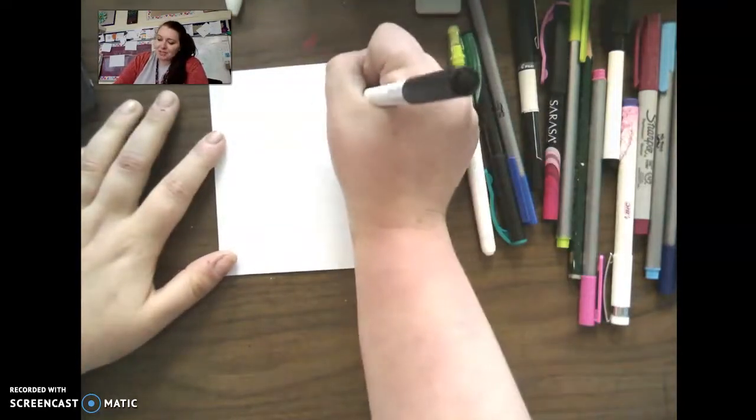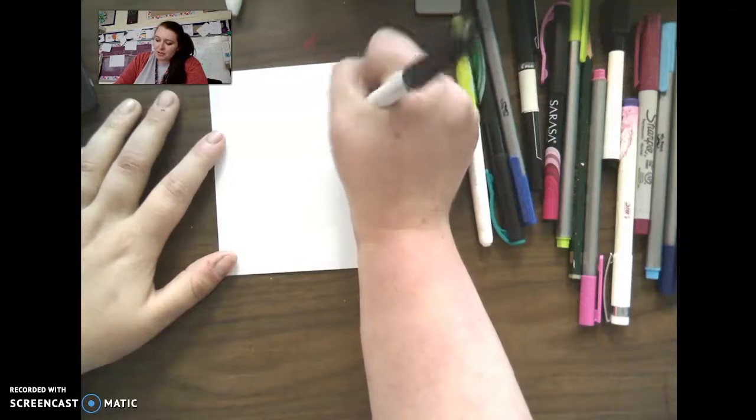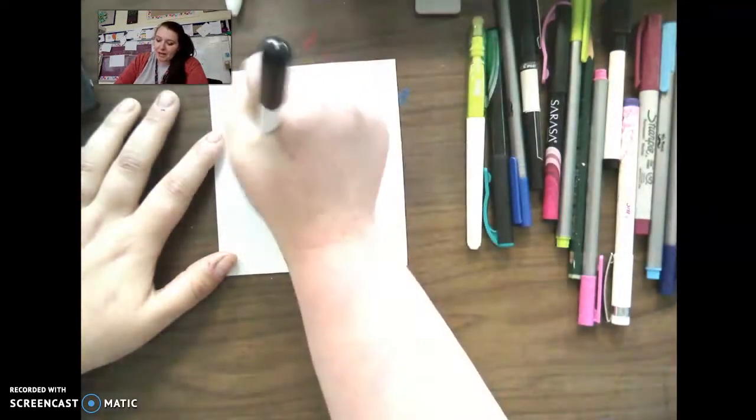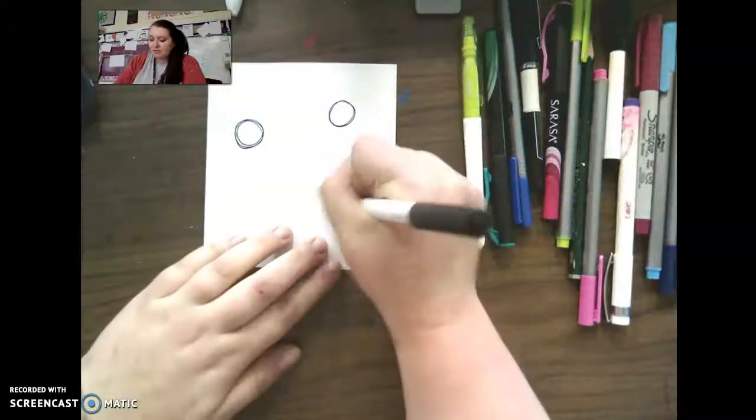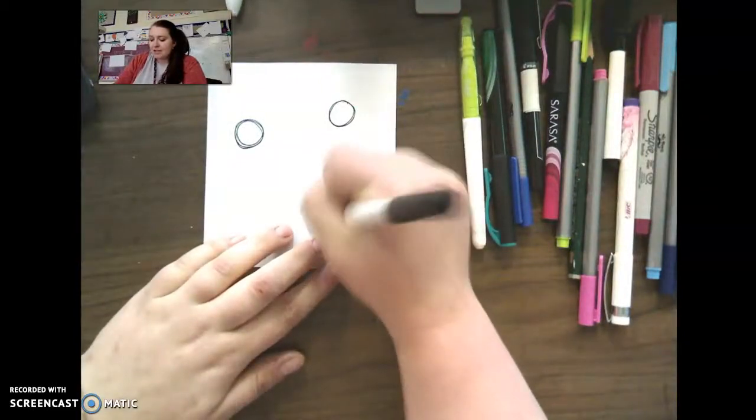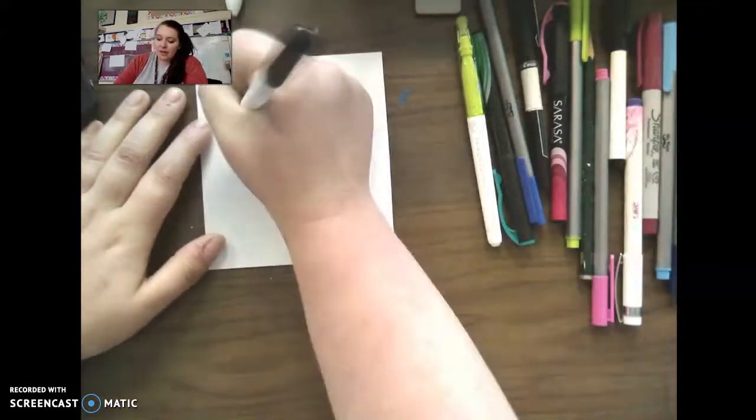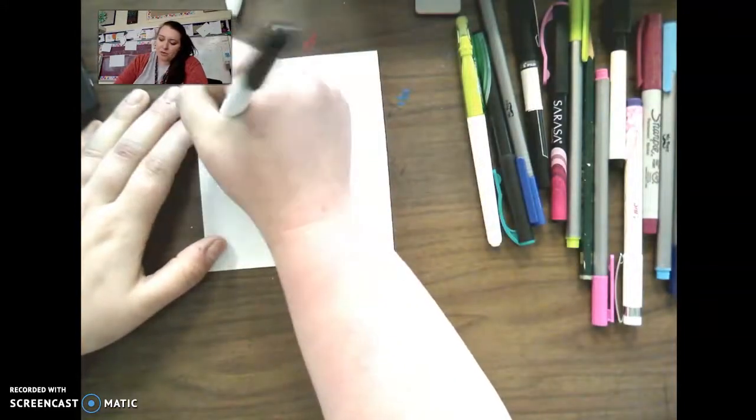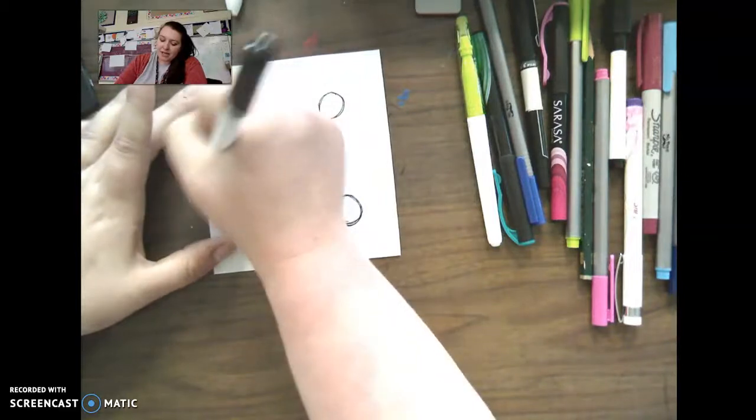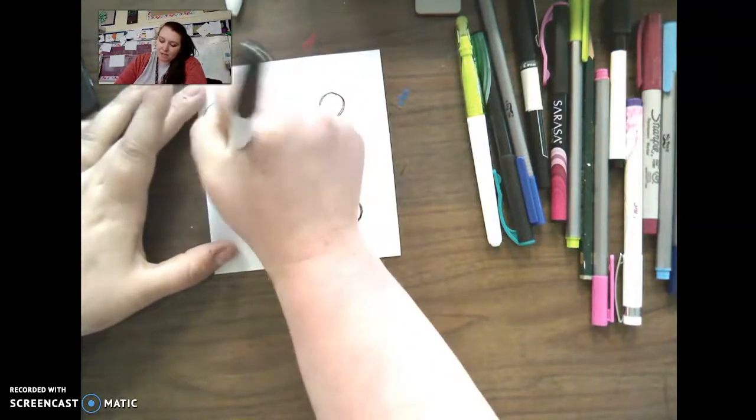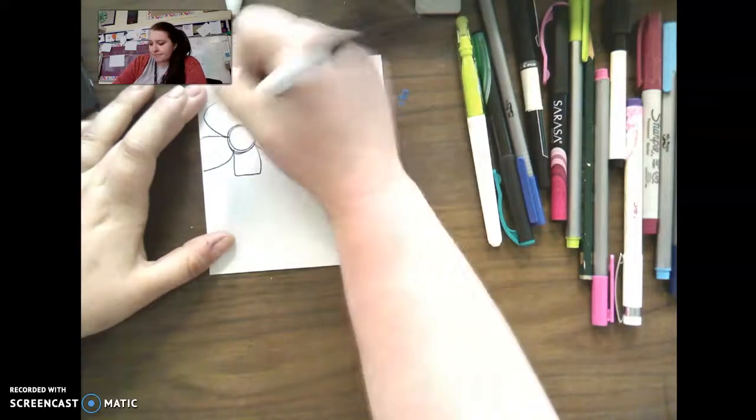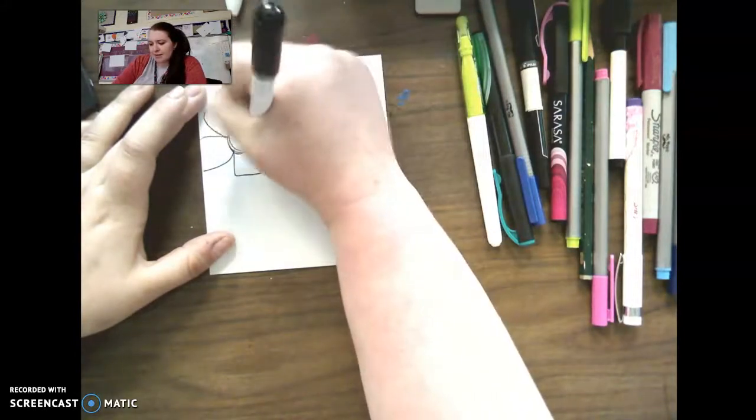All right, so the first thing we're going to do is draw three circles. You don't have to do what I'm doing. This is just directed drawing if you need help with drawing something. And this one's going to be three different flowers. I like to have my flowers come off the page. It's just a little more interesting and it doesn't need to be perfect.